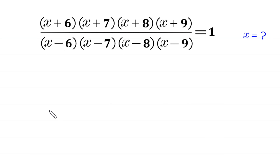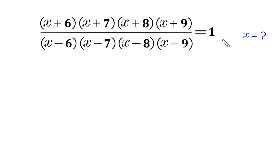Hello, welcome to how to solve this very nice algebra equation: (x+6)(x+7)(x+8)(x+9) divided by (x-6)(x-7)(x-8)(x-9) is equal to 1. We need to find all possible values of x.